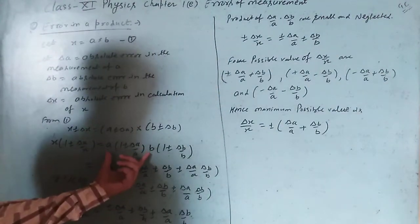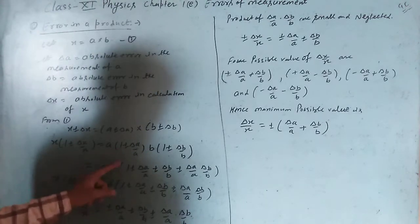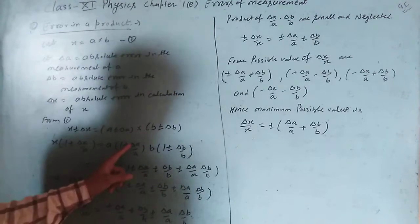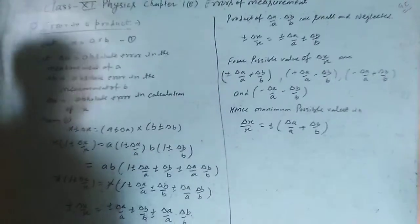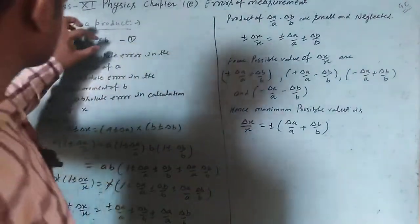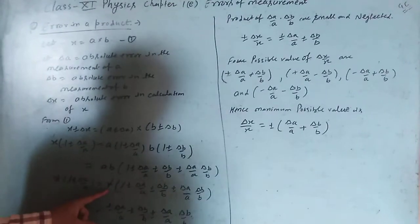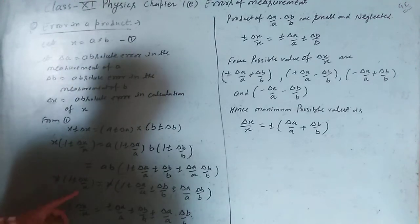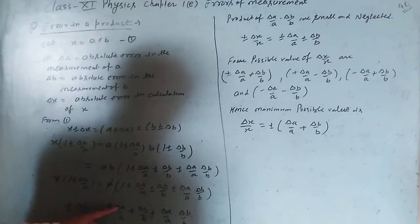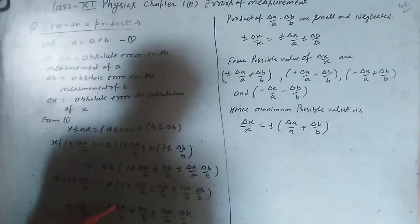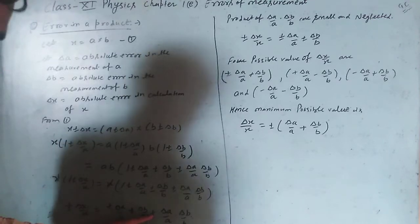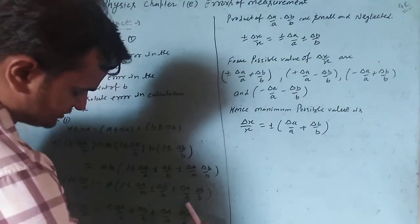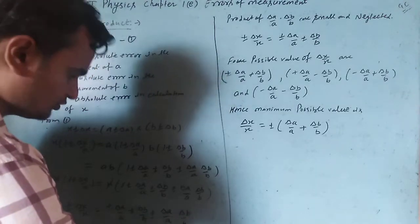Expanding the right-hand side: 1 plus minus delta a upon a plus minus delta b upon b plus (delta a upon a)(delta b upon b). Since a times b equals x, the x cancels out, and the 1 on both sides also cancels, leaving plus minus delta x upon x.